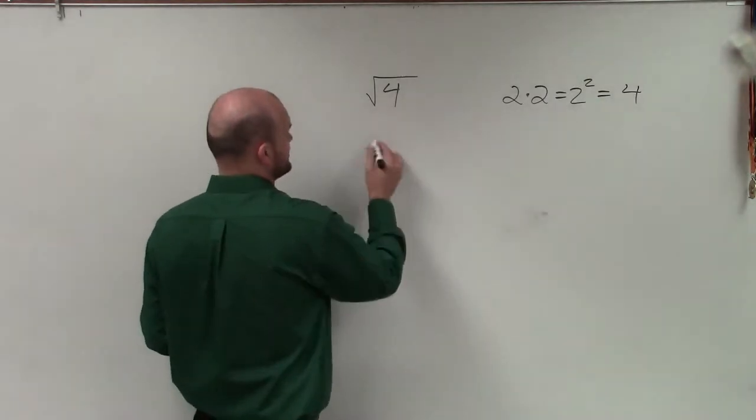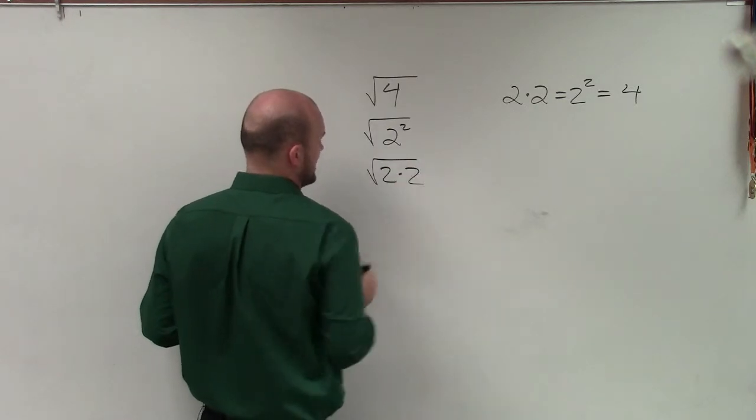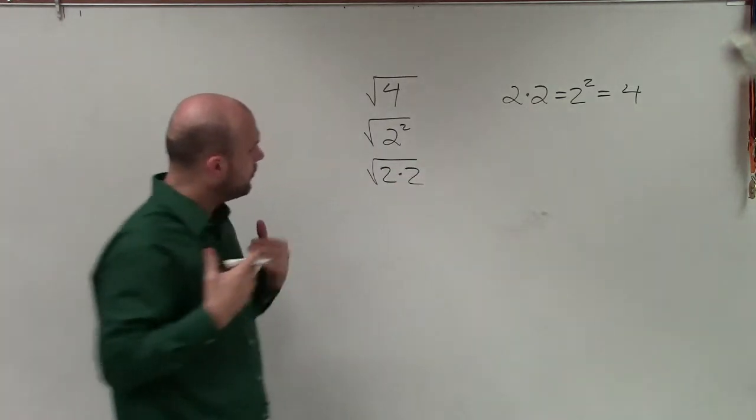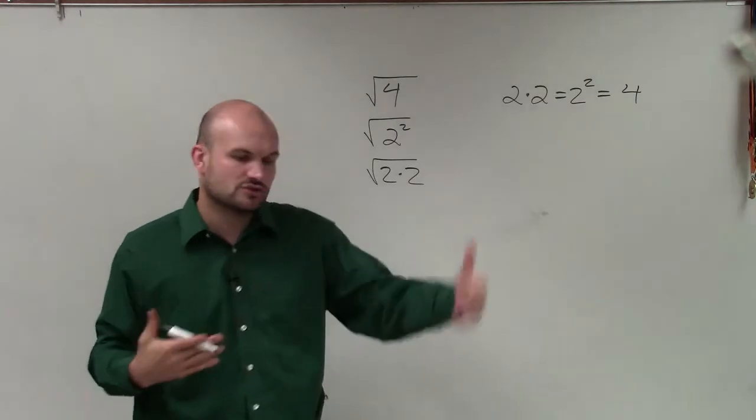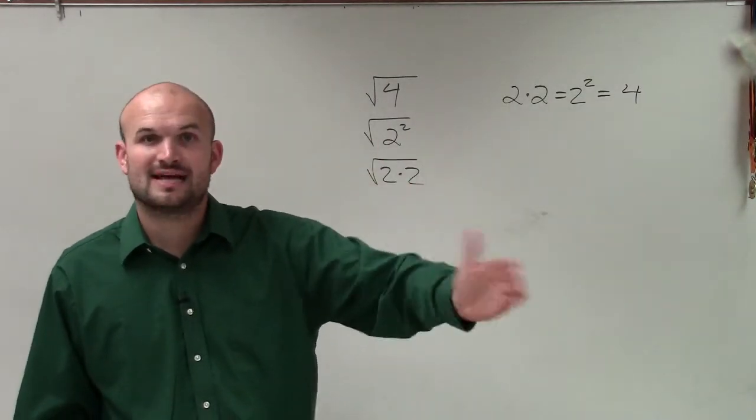So I can rewrite the square root of 4 as the square root of 2 squared, or as the square root of 2 times 2. When looking at the square root, what is the number multiplied by itself that equals 4? Well,